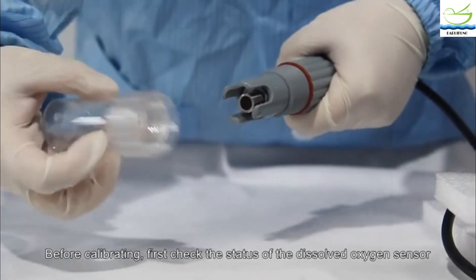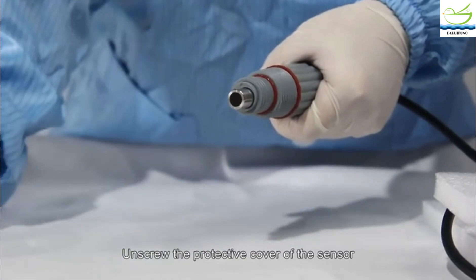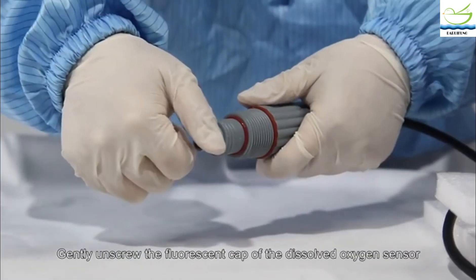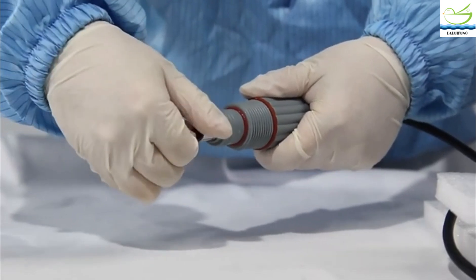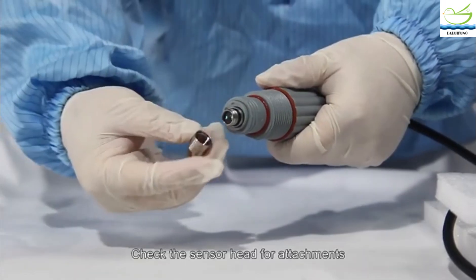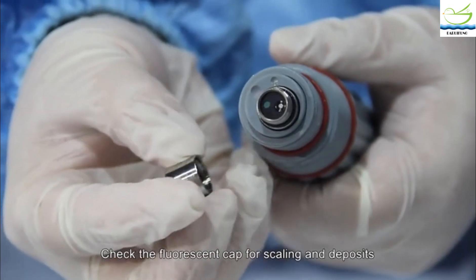Before calibrating, first check the status of the dissolved oxygen sensor. Unscrew the protective cover of the sensor, gently unscrew the fluorescent cap of the dissolved oxygen sensor. Check the sensor head for attachments and check the fluorescent cap for scaling and deposits.